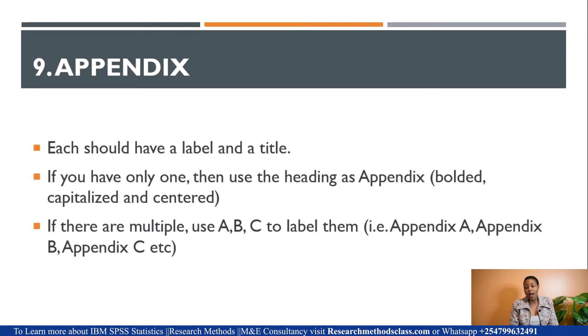Appendix should have a label and a title. If you only have one, use the heading as Appendix—bolded, capitalized, and centered. If there are multiple, appendices are numbered as A, B, C, D, not 1, 2, 3. There will be Appendix A, Appendix B, Appendix C, etc. As we said, this is the only area where you are allowed to underline.